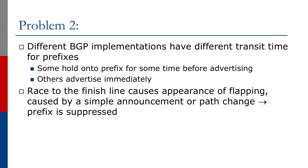The second problem is that different BGP implementations have different transit times for prefixes — this is the minimum advertisement interval. Some hold on to the prefix for some time before advertising it; others advertise immediately after best path selection. When networks using different BGP implementations peer with each other, this creates a race to the finish line causing the appearance of flapping, when in fact there has been no flap at all — just a brand new prefix announcement or a simple path change — and that causes the prefix to be suppressed.